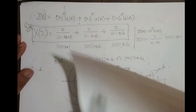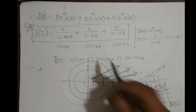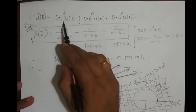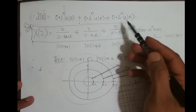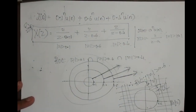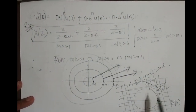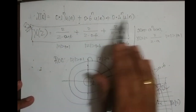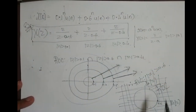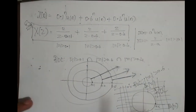If it is a right-sided sequence with more than one component, the ROC is outside the outermost circle. For a left-sided sequence, the ROC is inside the innermost circle. The key is to find the region where all individual sequence ROCs intersect — that region is the combined ROC.